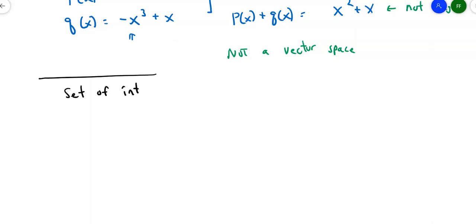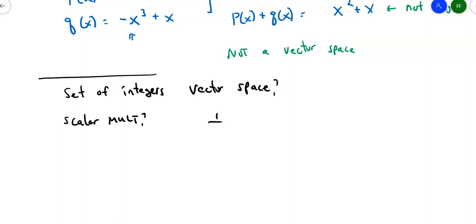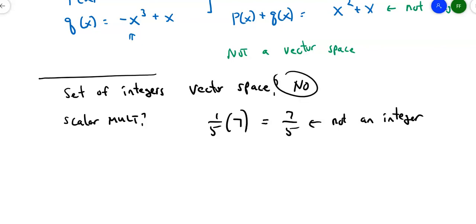How about the set of integers — is it a vector space? If you add two integers, you get another integer, so closure under addition holds. But scalar multiplication fails: if you multiply a scalar (which can be a fraction, radical, or negative number) by an integer, the result is not necessarily an integer. So the set of integers is not a vector space. Scalars can be fractions or radicals, so scalar multiplication is a quick way to check whether a set is a vector space. Next, we'll look at subspaces of vector spaces.